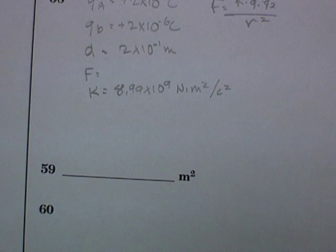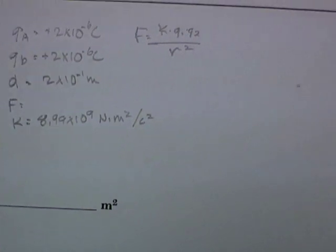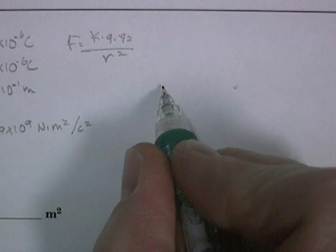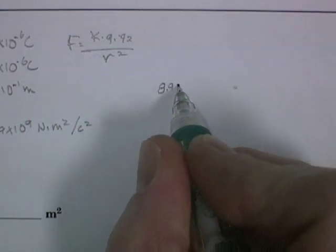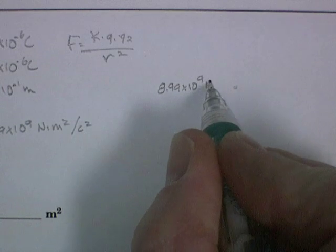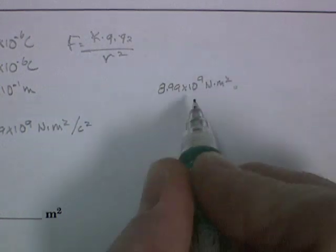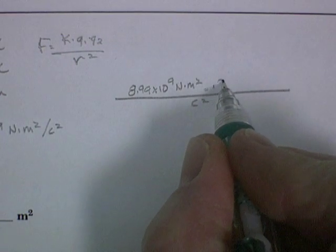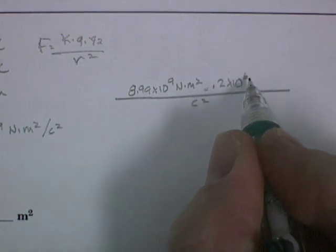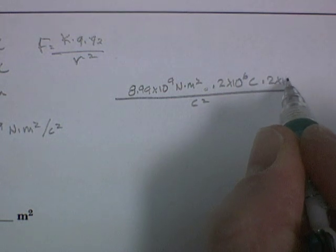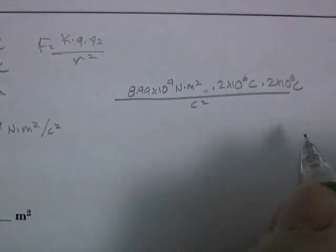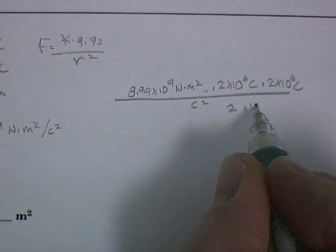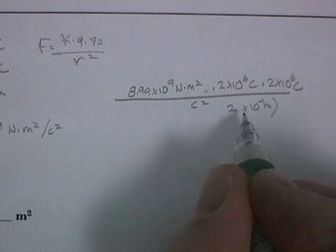The next step is to plug in all of our knowns into the formula. Don't forget units. So K would be 8.99 times 10 to the 9 newton times meter squared per coulomb squared. And then we multiply that times 2 times 10 to the negative 6 coulombs times 2 times 10 to the negative 6 coulombs. And we divide it by the distance, 2 times 10 to the negative 1 meters. Don't forget to square that.